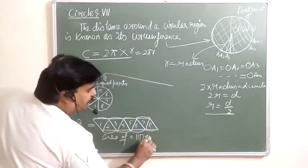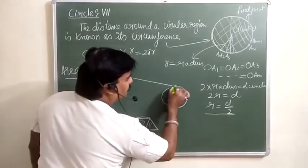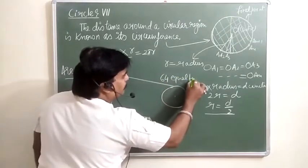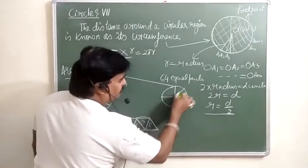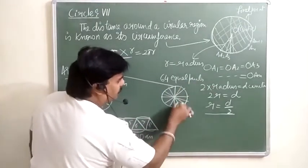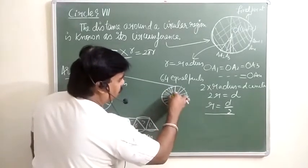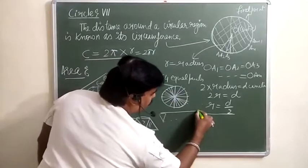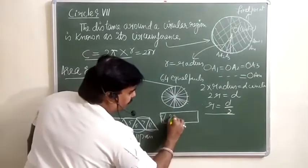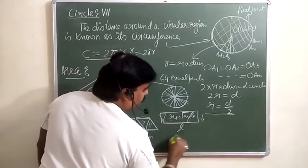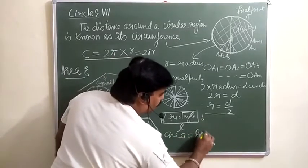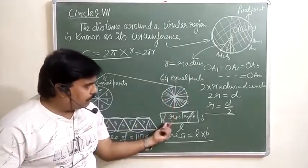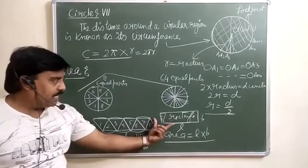Again, if we divide this circle into 64 equal parts and put all these parts together, you will get a rectangle with dimensions L × B. So the area of the circle will be equal to the area of this rectangle.